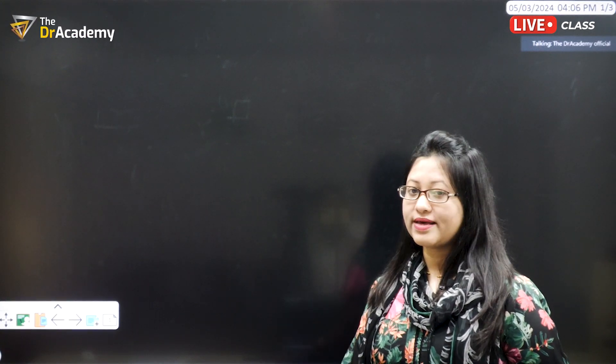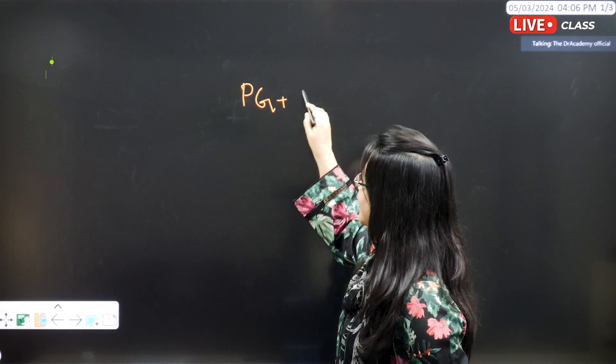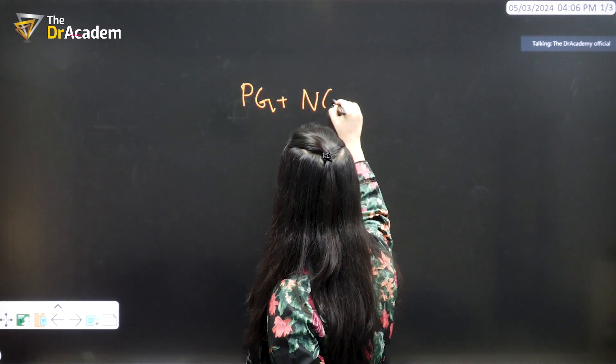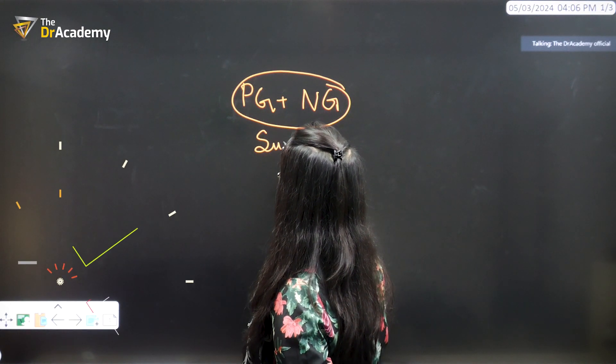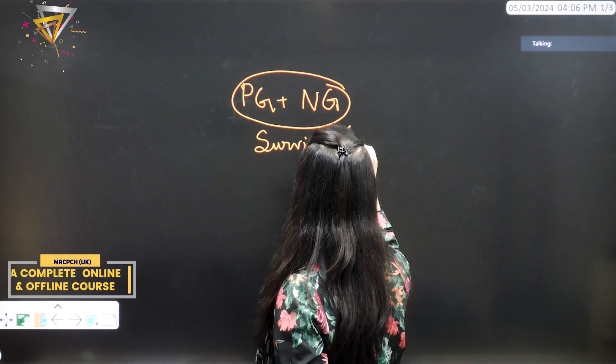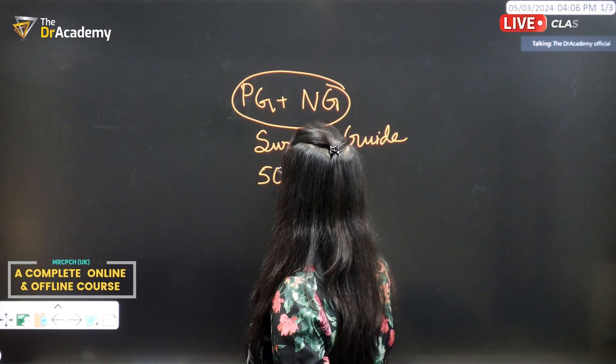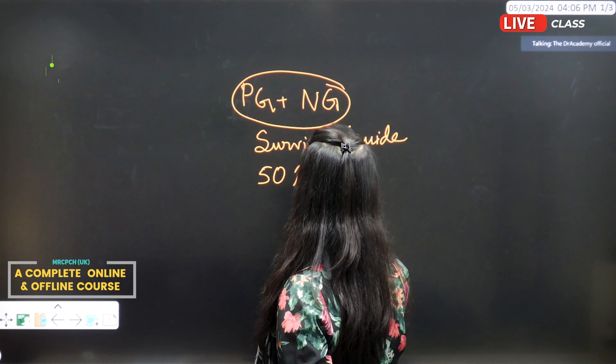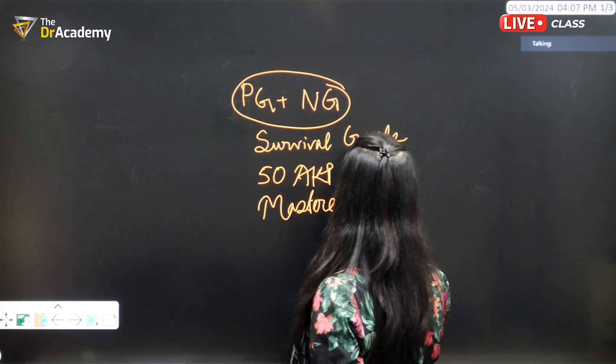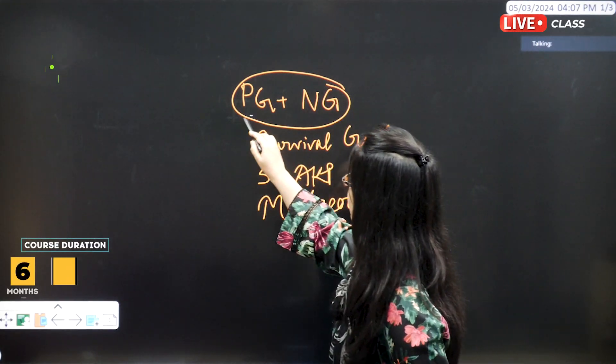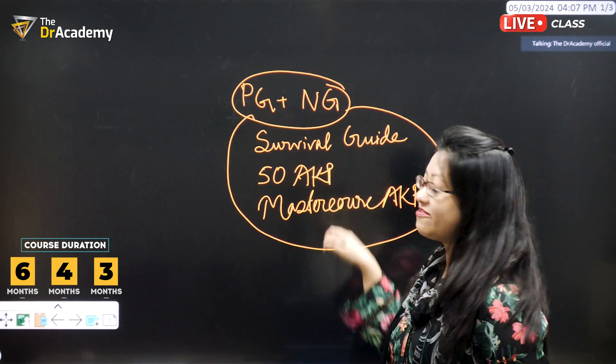So, according to the syllabus, as you guys can see, we are reading two guidelines, pediatric guideline and neonatal guideline. Two books, then survival guide, then 50 cases of AKP, then master course AKP. So, you see, we are entirely reading these five books.